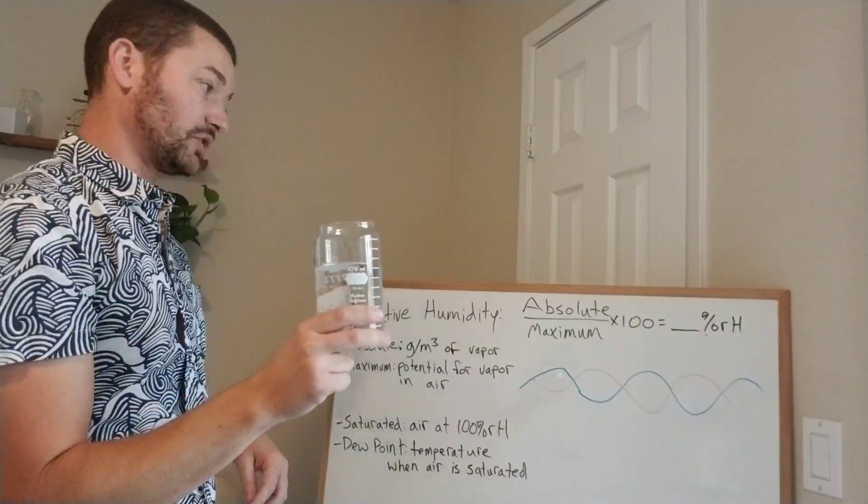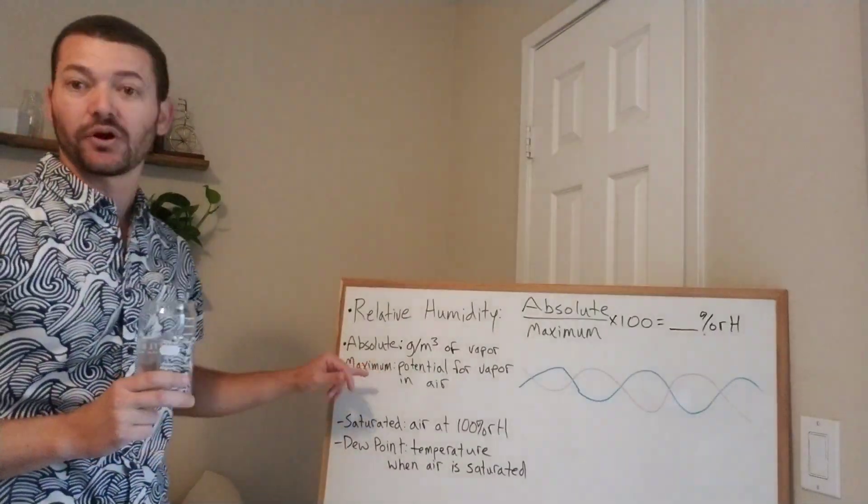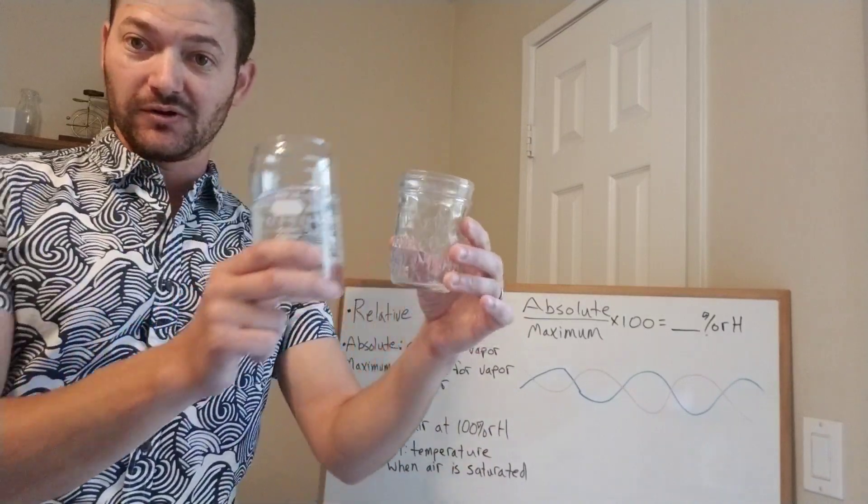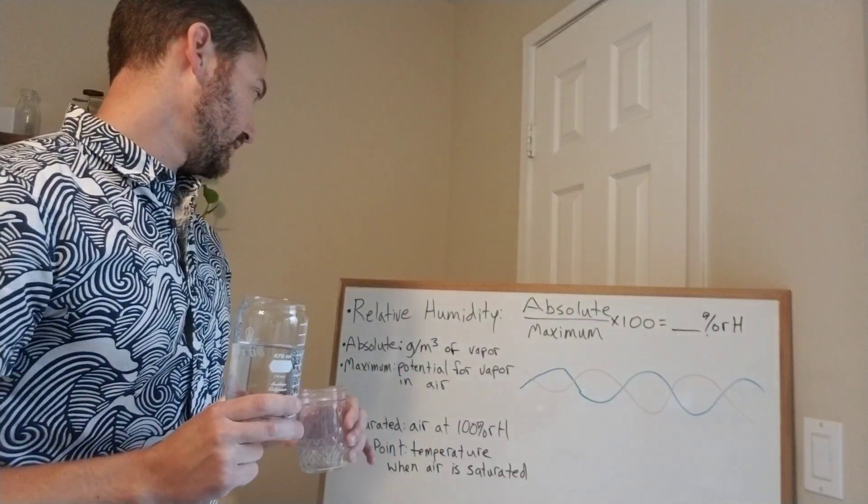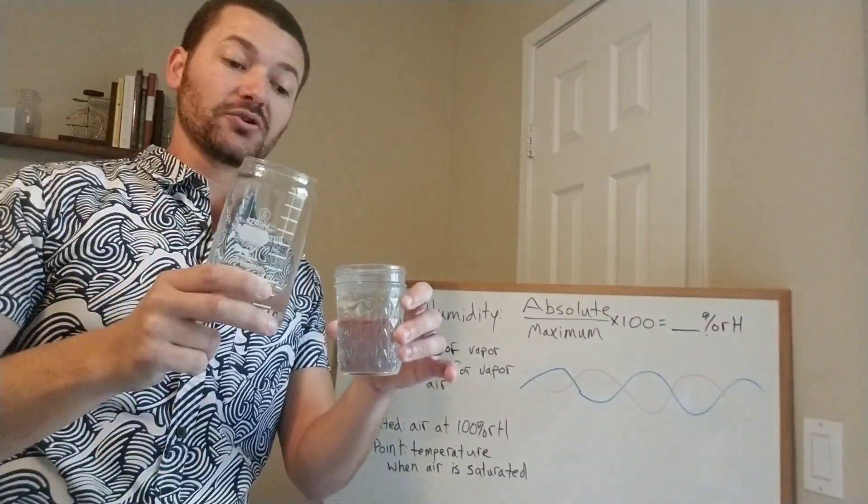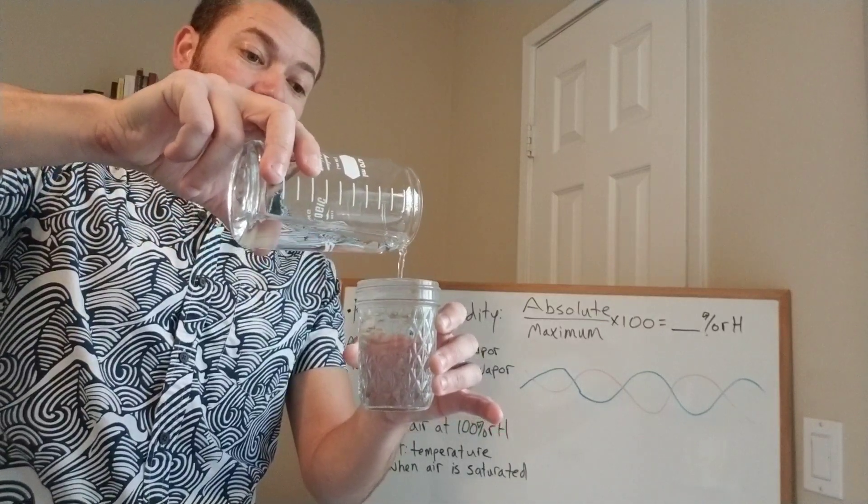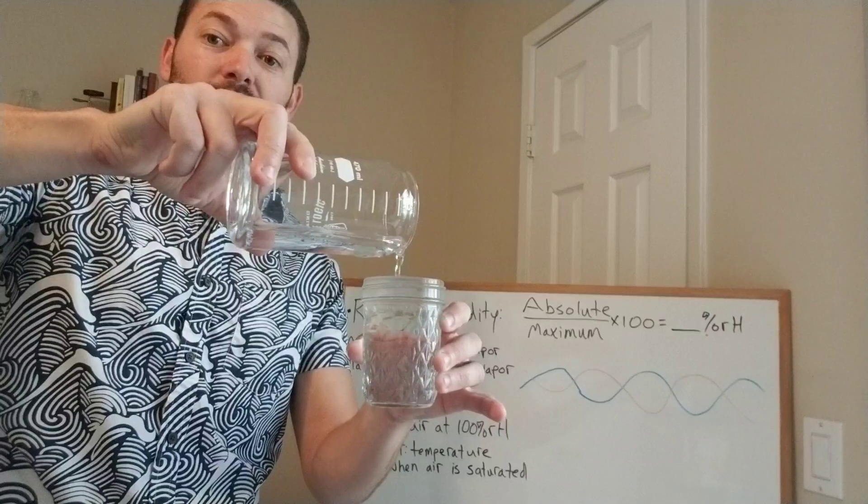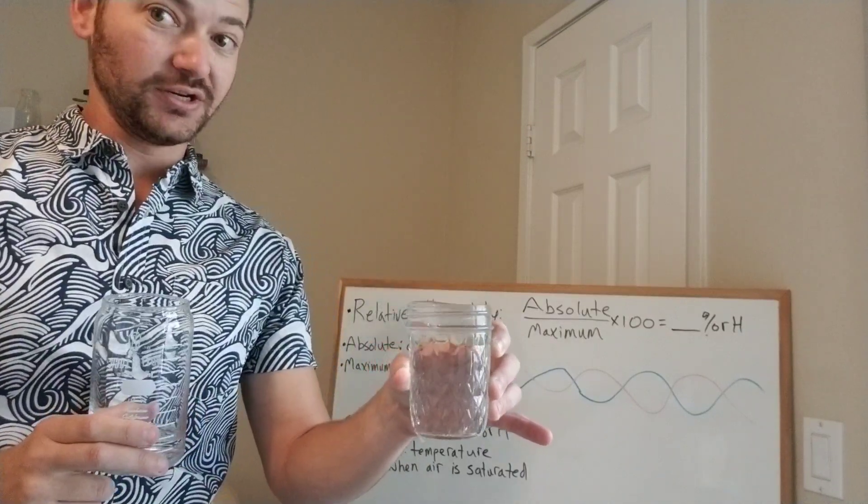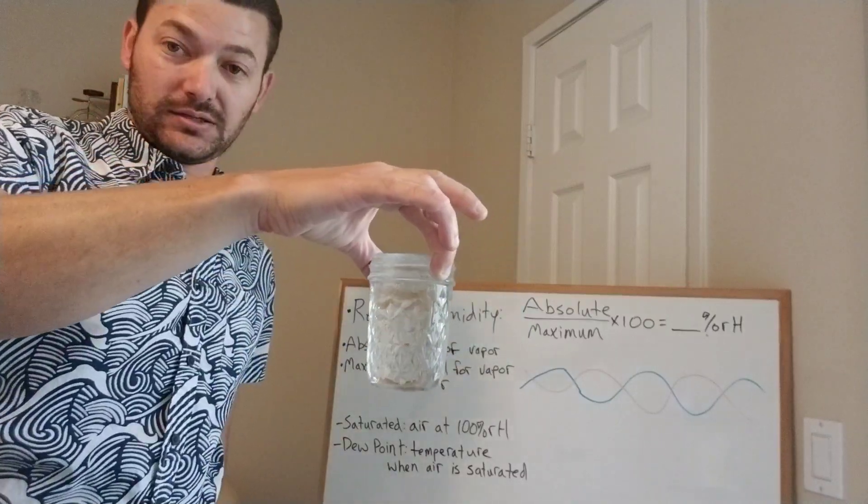And then it gets even colder. So it goes from our 70-degree air down to 60 degrees Fahrenheit. 60 degrees Fahrenheit is colder. So our maximum potential drops. Our air loses the ability to hold vapor. So instead of being a 16-ounce cup, we're going to go down to this small glass. So as the air cools, max humidity drops with the same amount of water in the air. So relative humidity increases to the point where our air is full of water. Humidity keeps dropping. And what happens? Precipitation. So this air that's colder and has a lower maximum humidity is now saturated. It's full. It's at 100% relative humidity.